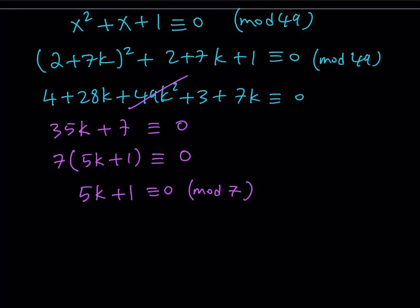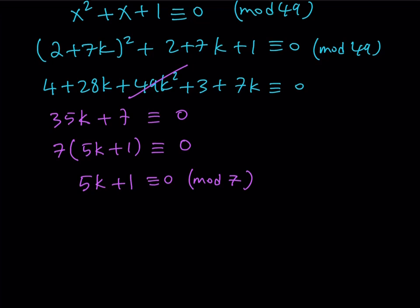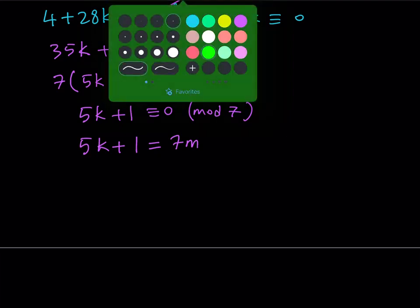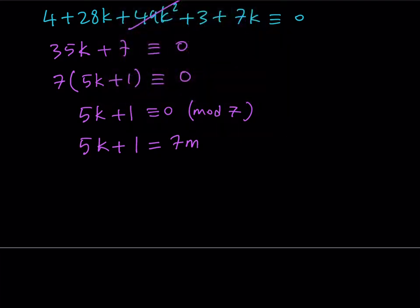You know that if you have any type of congruence, you can always turn it into an equation, but of course, you have to use additional integers here. So let's go ahead and write it as: since 5k + 1 ≡ 0 (mod 7), it means this is a multiple of 7. So let's go ahead and write it as 7m where m is an integer. So at this point, you can just solve this diophantine equation. And it's easy to guess and check because numbers are fairly small.